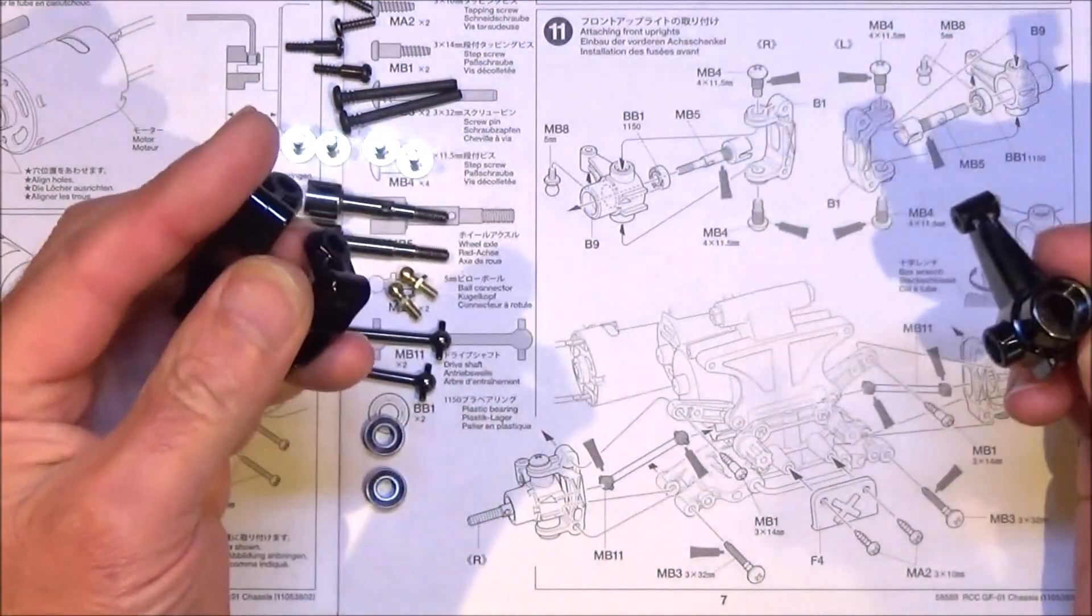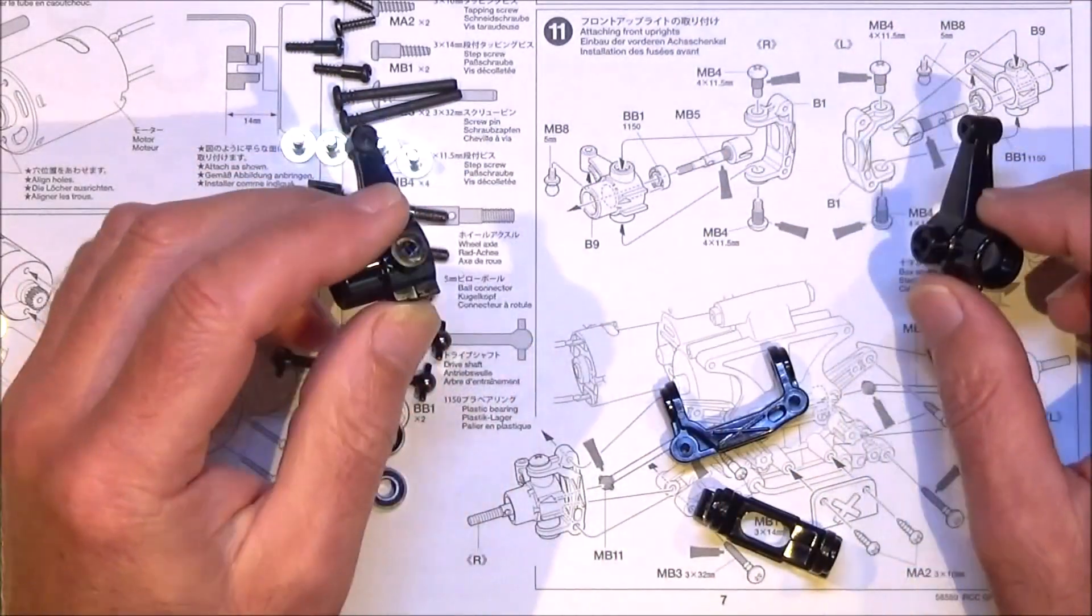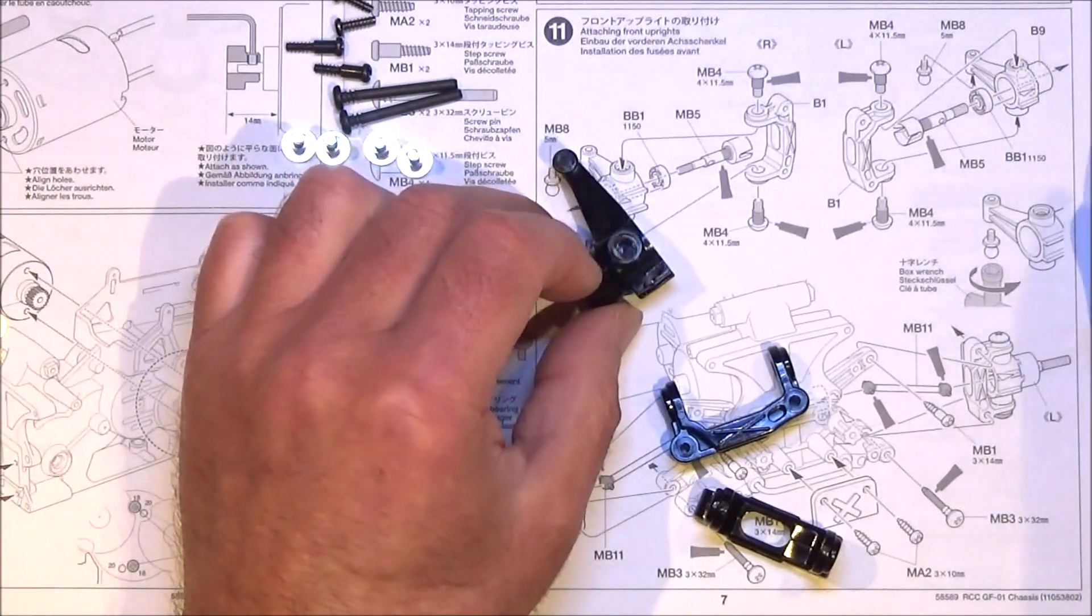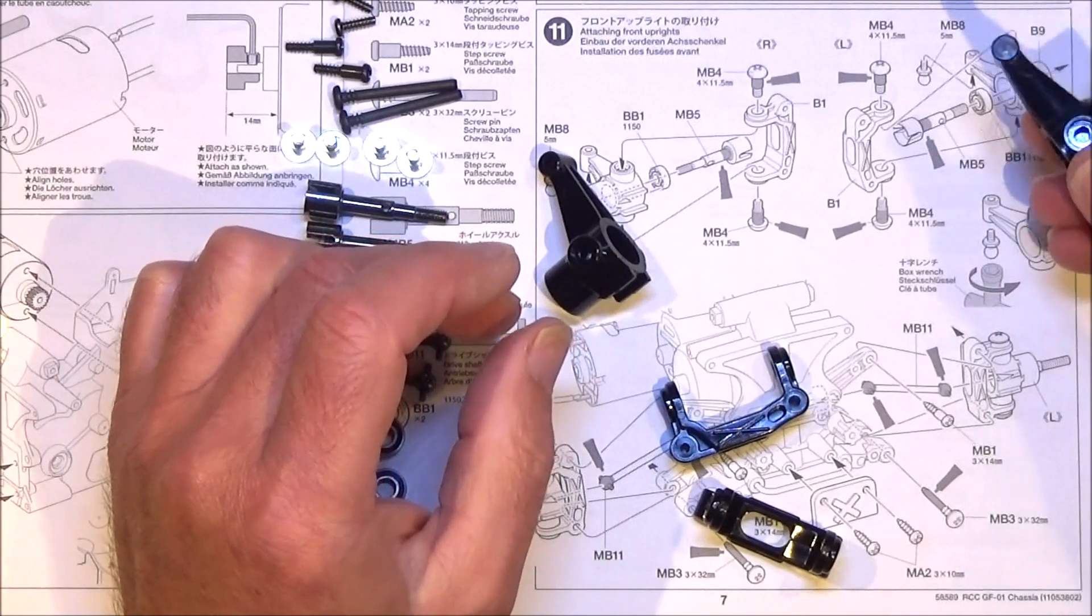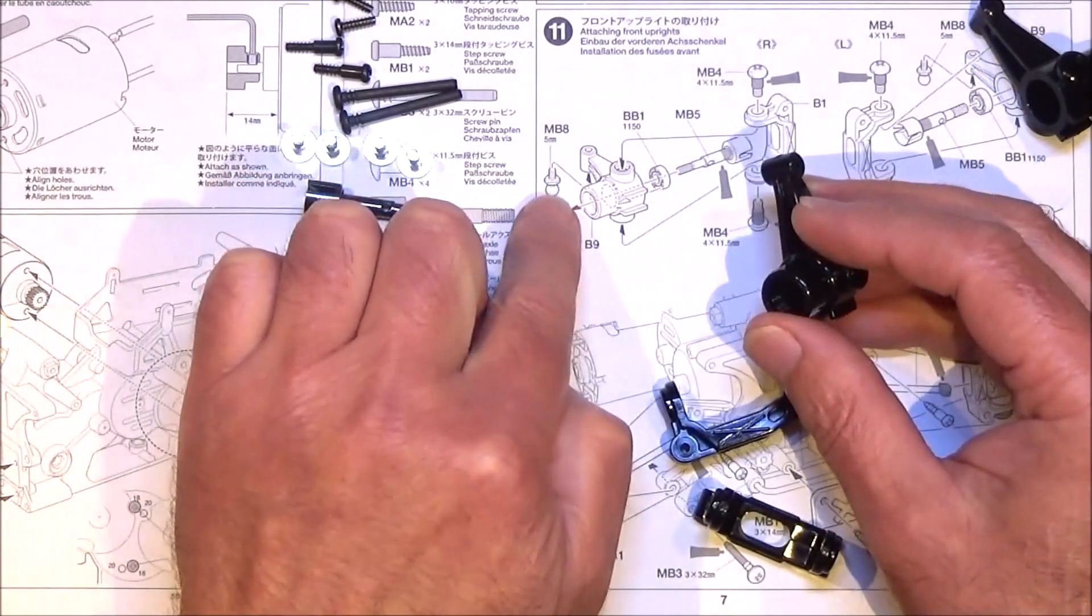You're going to need these plastic parts which are B1s and B9s. First thing we're going to do is get these B9s. Let's get the orientation right with the diagram, one that way and this one that way.